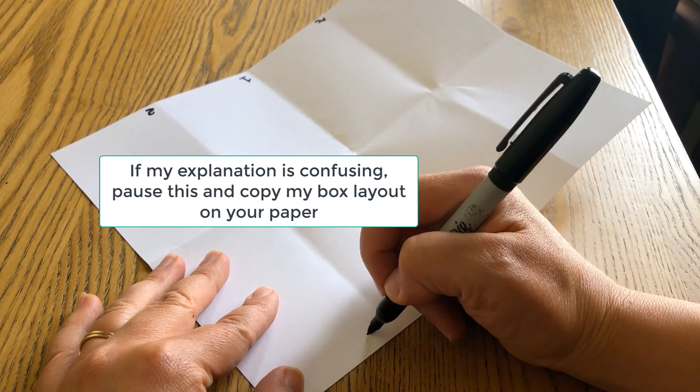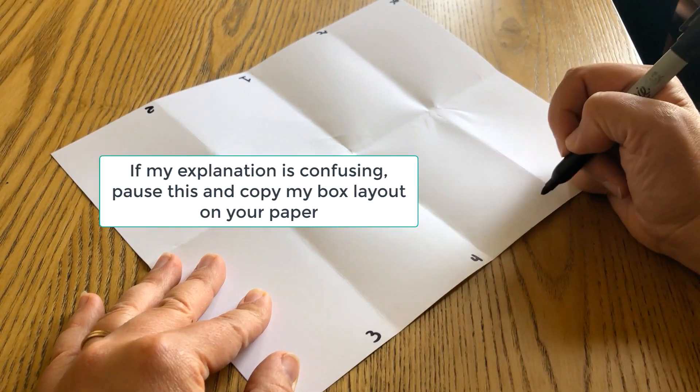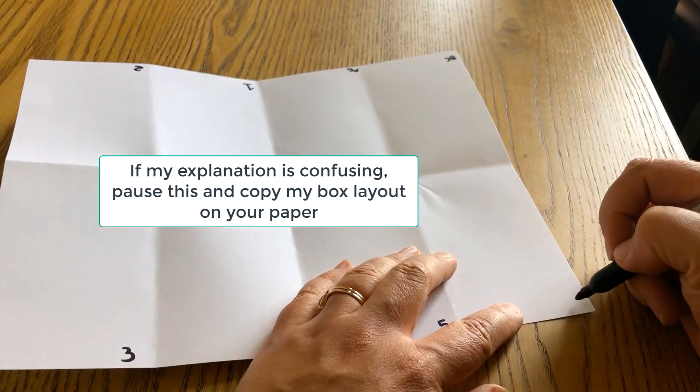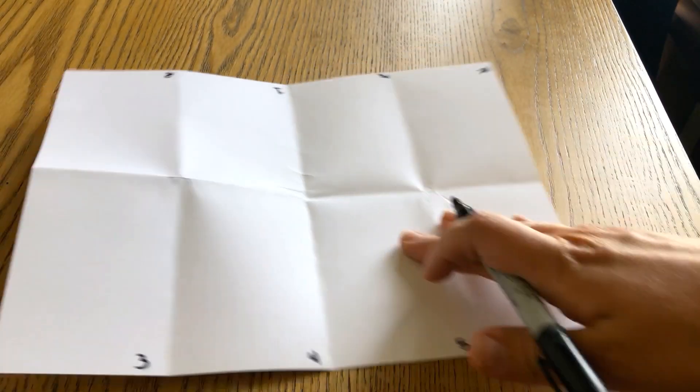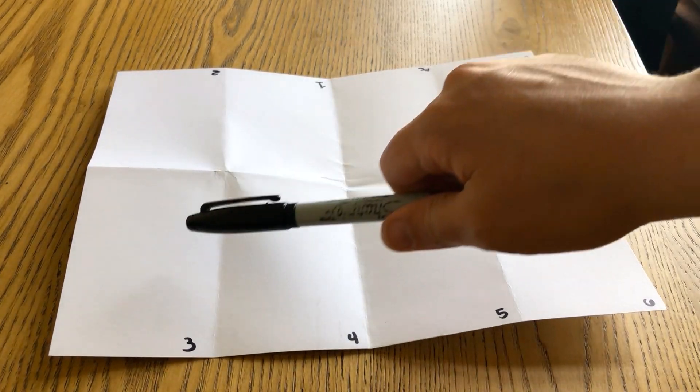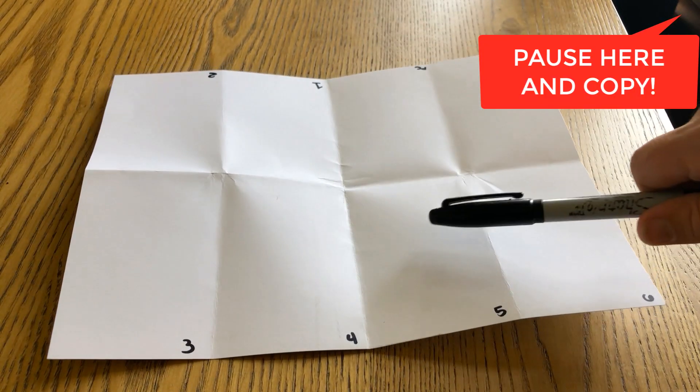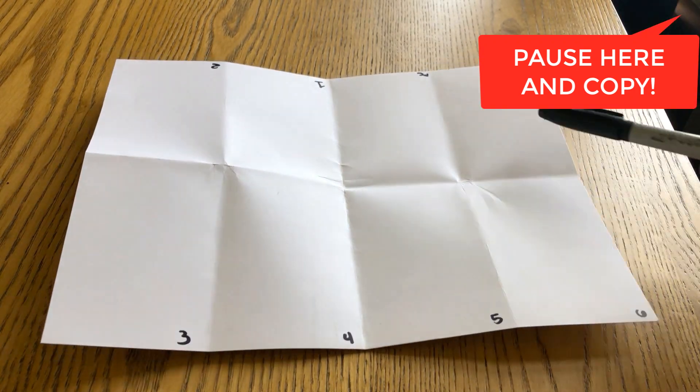Across from two is box three, then four, then five, and last but not least, box number six. So I'm numbering these ahead of time so I know what direction my drawings are going to go. Remember, three is across from two, four is across from one, five is across from your front cover, and six is across from your back cover.